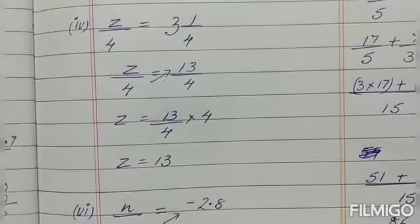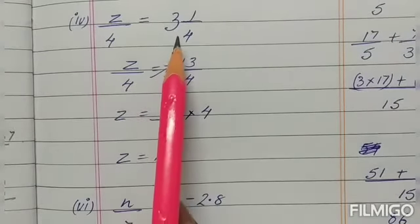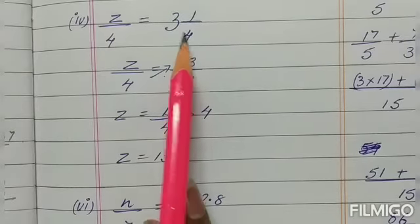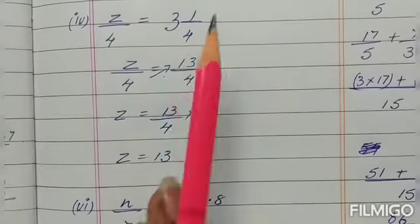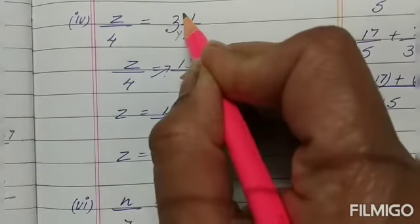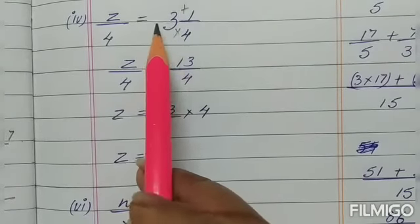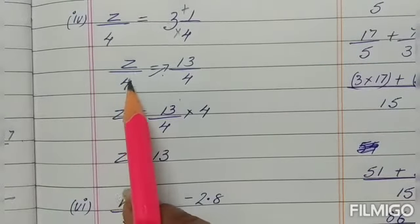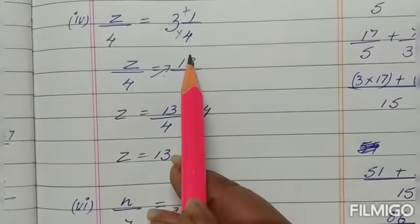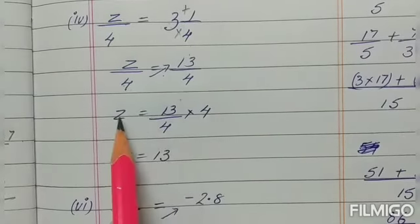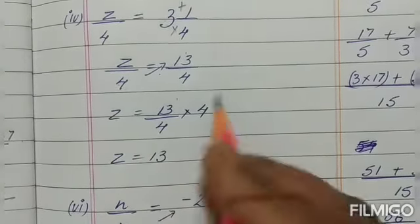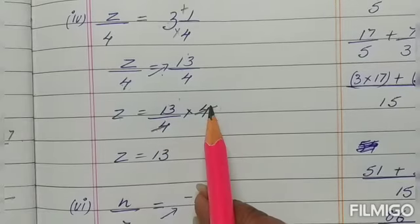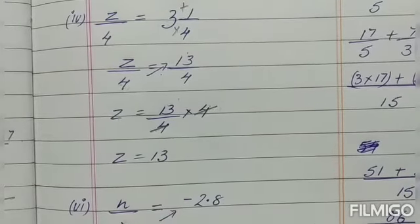See the fourth subpart: z upon 4 equals 3 and 1 upon 4. First, change the mixed fraction into an improper fraction. 4 threes are 12, plus 1, gives 13 upon 4. Now, this 4 has to be removed. When it goes from division to the other side, it will be multiplied. So z equals 13 upon 4 into 4. The 4 and 4 get reduced, and z equals 13.